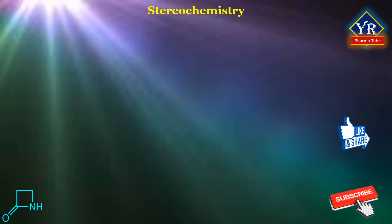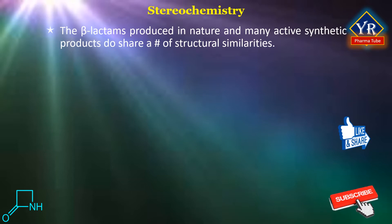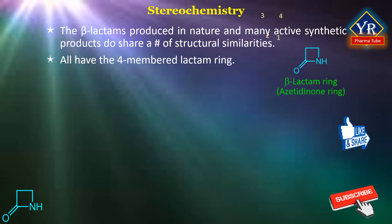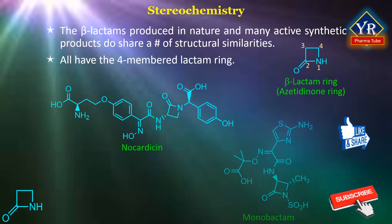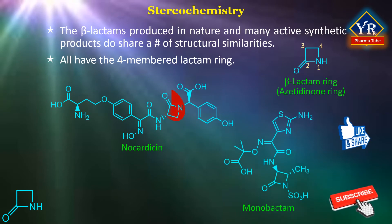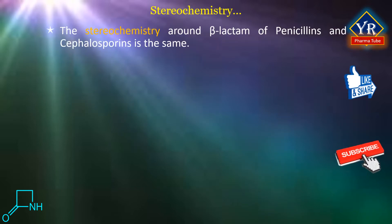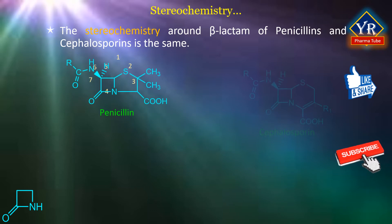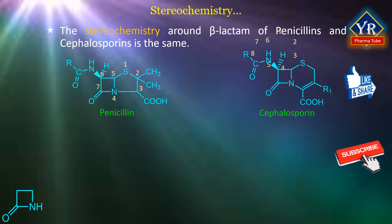Stereochemistry of beta-lactam antibiotics. The beta-lactams produced in nature and many of the more active synthetic products share a number of structural similarities. All have the four-membered lactam ring. With the exception of the nocardicins and monobactams, the beta-lactam ring is fused through the nitrogen and the adjacent tetrahedral carbon atoms to a second ring. The stereochemistry around the beta-lactam ring of the penicillins and cephalosporins is the same in both series.